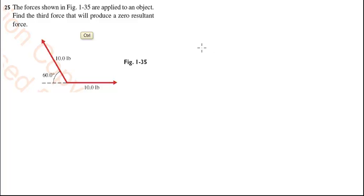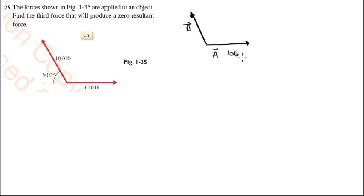Let's do a graphical solution first and then an analytic solution. To redraw the two vectors, we have a 10-pound vector — I'll call that A — and a 10-pound vector in this direction — I'll call that B. I want to find the sum of A and B, so I bring A up here parallel to itself, tip to tail, and A plus B is then this vector.